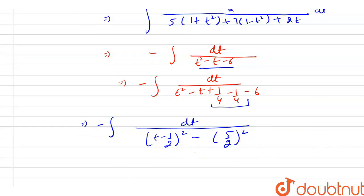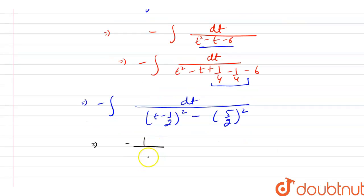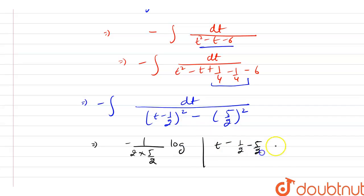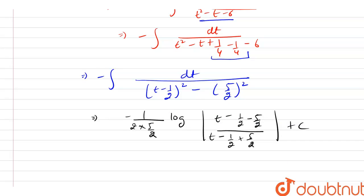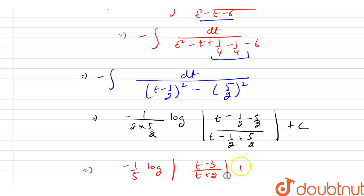Now, applying the standard formula for the integral of 1/(u² - a²), the value is minus 1 divided by (2 × 5/2) times log of |(t - 1/2 - 5/2) divided by (t - 1/2 + 5/2)| plus C. After simplifying, this equals minus (1/5) log |(t - 3) divided by (t + 2)| plus C.